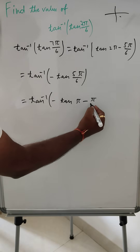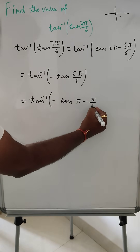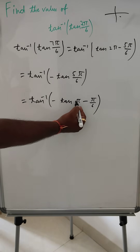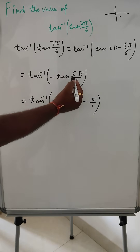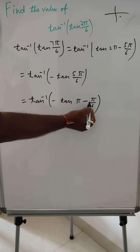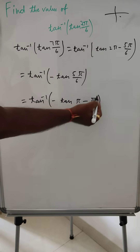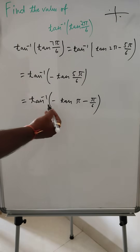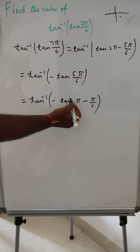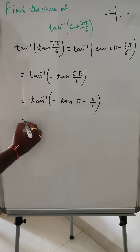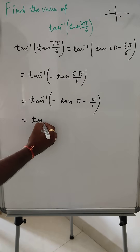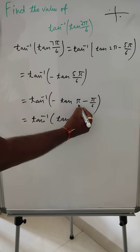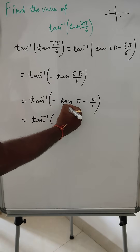So π - π/6 gives us 6π/6 - π/6 = 5π/6. This is in the second quadrant, where only sine is positive, so it will again be negative. Minus times minus becomes plus, so we get tan⁻¹(tan(π/6)).